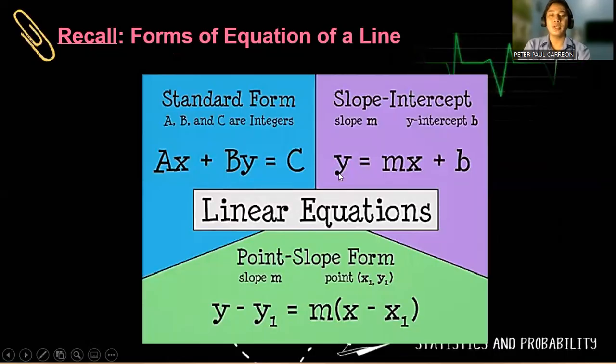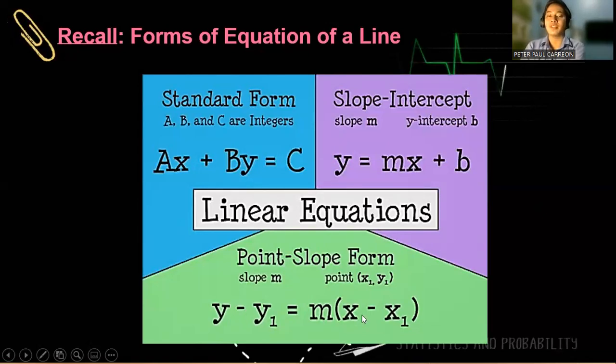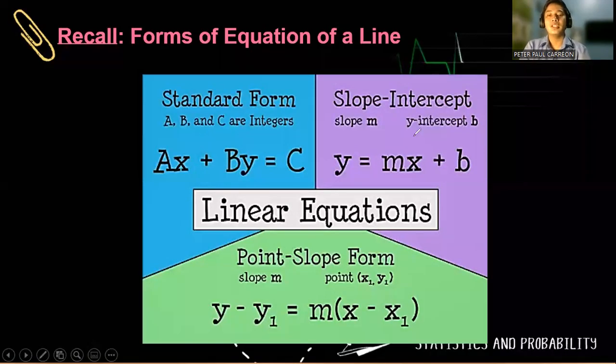So look at the slope-intercept form. It's y = mx + b. Our standard form is Ax + By = C. And the point-slope form y - y₁ = m(x - x₁). But among the three, this is how the trend line, the equation of the trend line or the regression line looks like. But this becomes b, and then the y-intercept is a, so don't get mixed up.